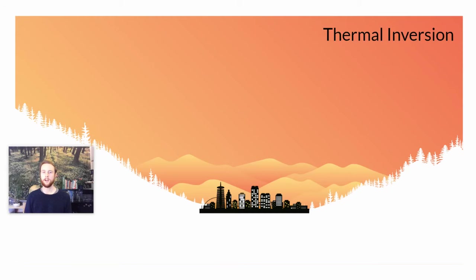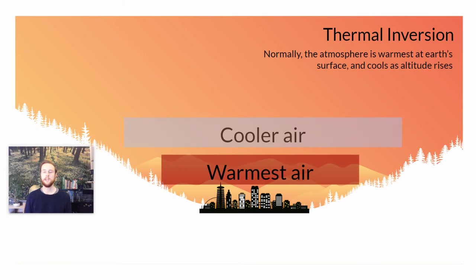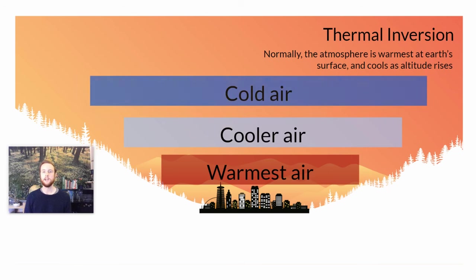Now we'll look at how a thermal inversion forms. First we have to understand the normal temperature gradient for atmospheric temperature near Earth. Normally, Earth heats the atmosphere most closest to its surface, so we should expect to find the warmest air near Earth's surface and air getting cooler as we rise in altitude. This is because Earth's surface absorbs sunlight and releases it as infrared radiation, and also because lower pressures at higher altitudes result in lower temperatures.